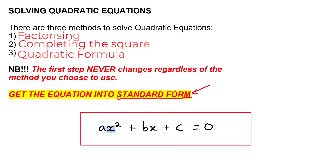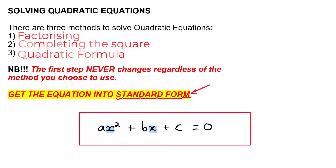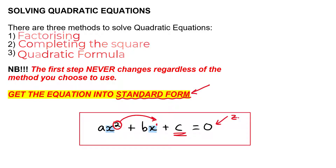All you need to remember is that the variables go in descending power: x to the power of 2, then x to the power of 1, and then a constant at the end. On the right-hand side you need to have zero. If you can get your equation into standard form, it makes it much easier to factorize, complete the square, or use the quadratic formula. Once it's in standard form, the majority of the work is already done.